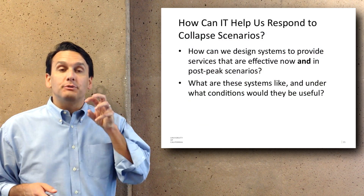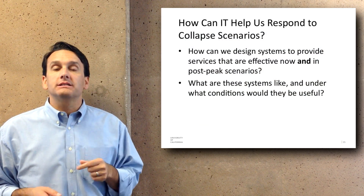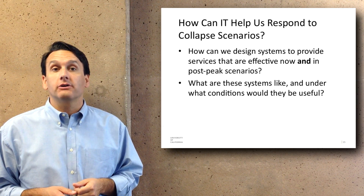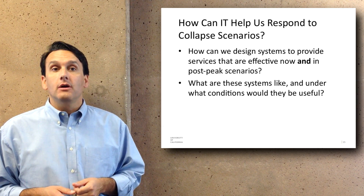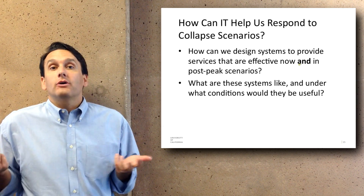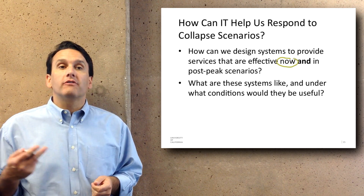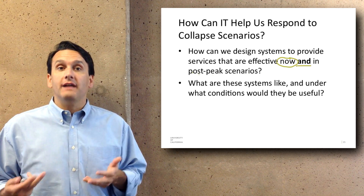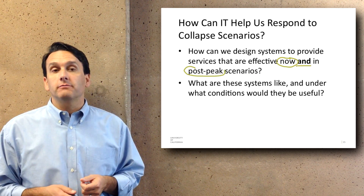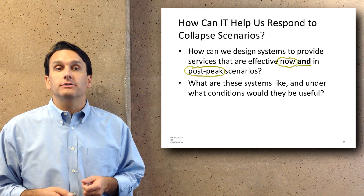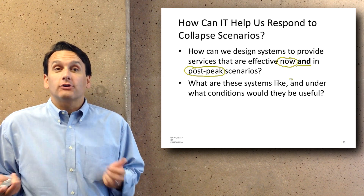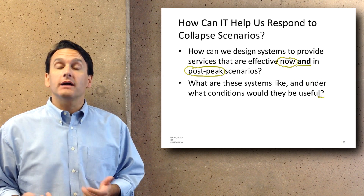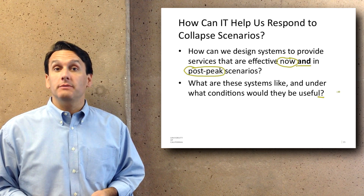We think there are some possibilities that IT can help us respond to these different collapse scenarios. For example, how can a system be designed that provides services that are effective now and also in various post-peak scenarios? What are the characteristics of these systems? What would they be like, and under what conditions would they be useful?